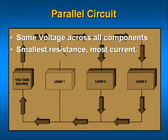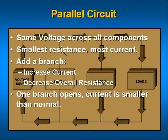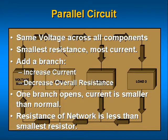The branch with the smallest resistance will have the most current. If a branch is added to an existing circuit, the total current will increase and the total resistance of the parallel circuit will decrease. If one branch opens, the total current will be smaller than normal. The total resistance of a parallel network is less than the smallest resistor — this is a great check on any calculation you may be performing.